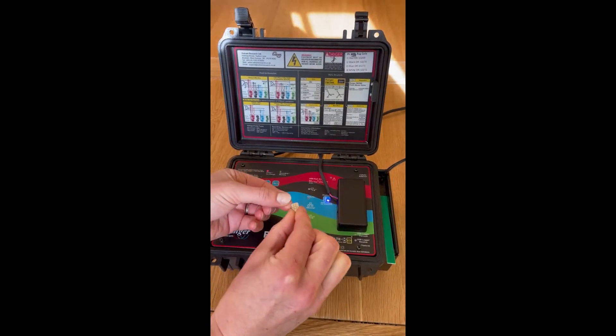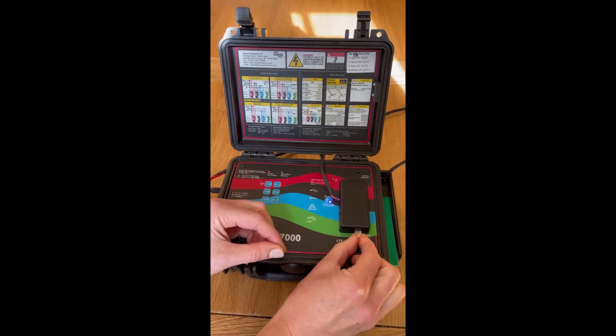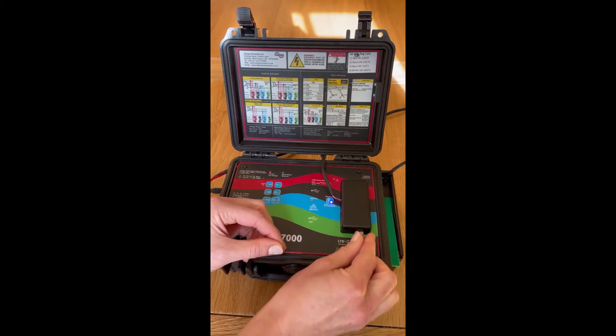Taking the SIM between your thumb and forefinger, insert it into the edge point like this.